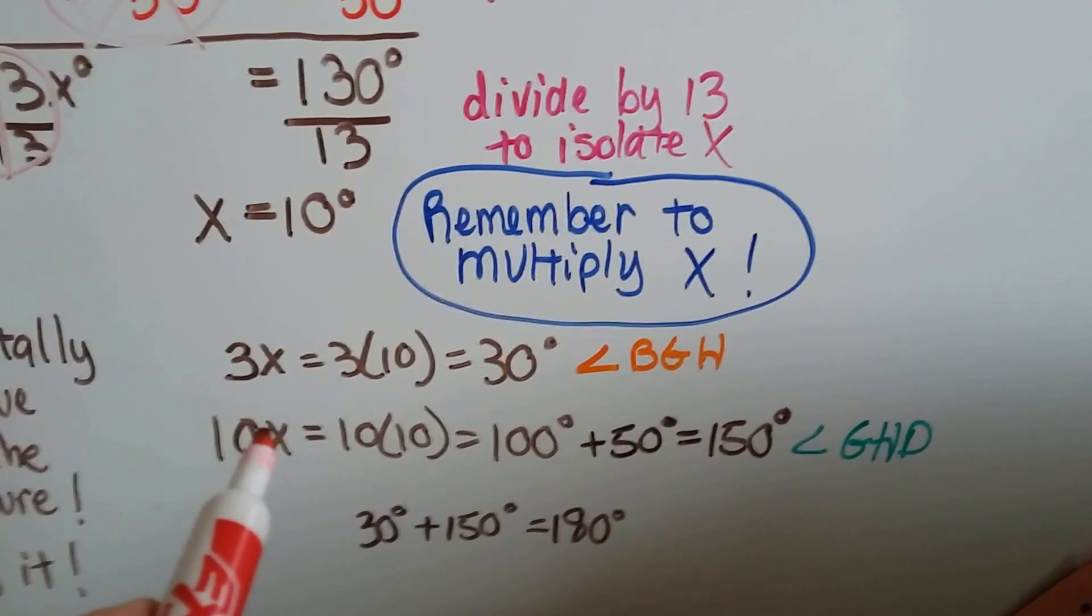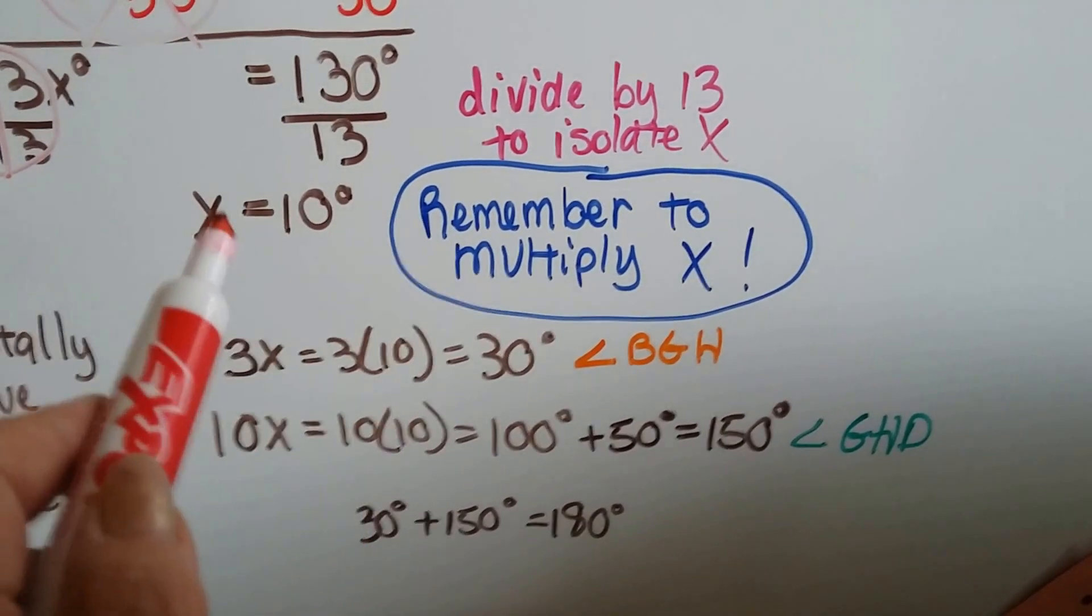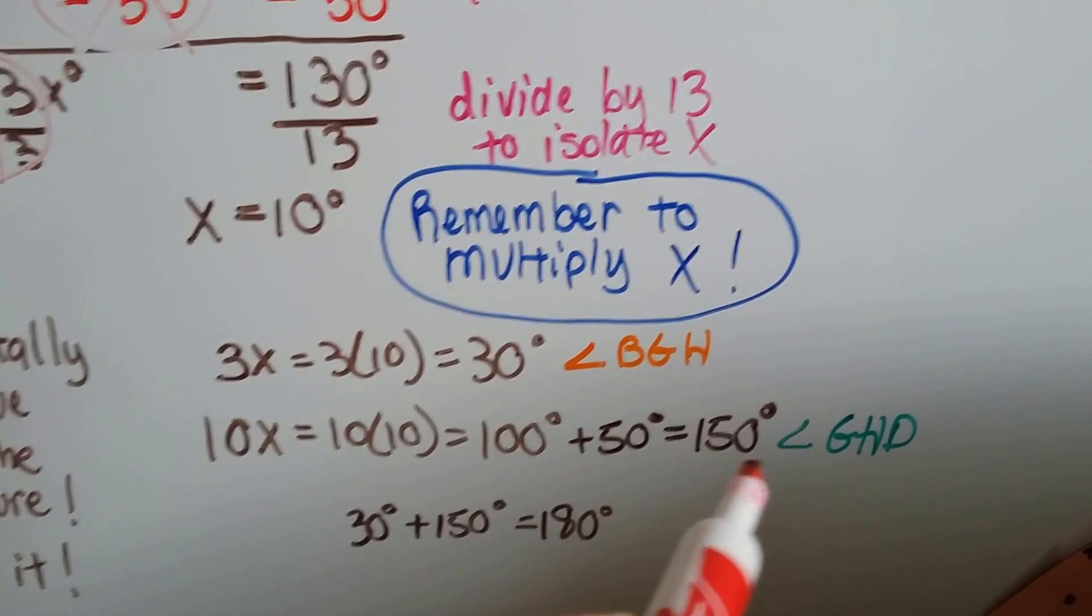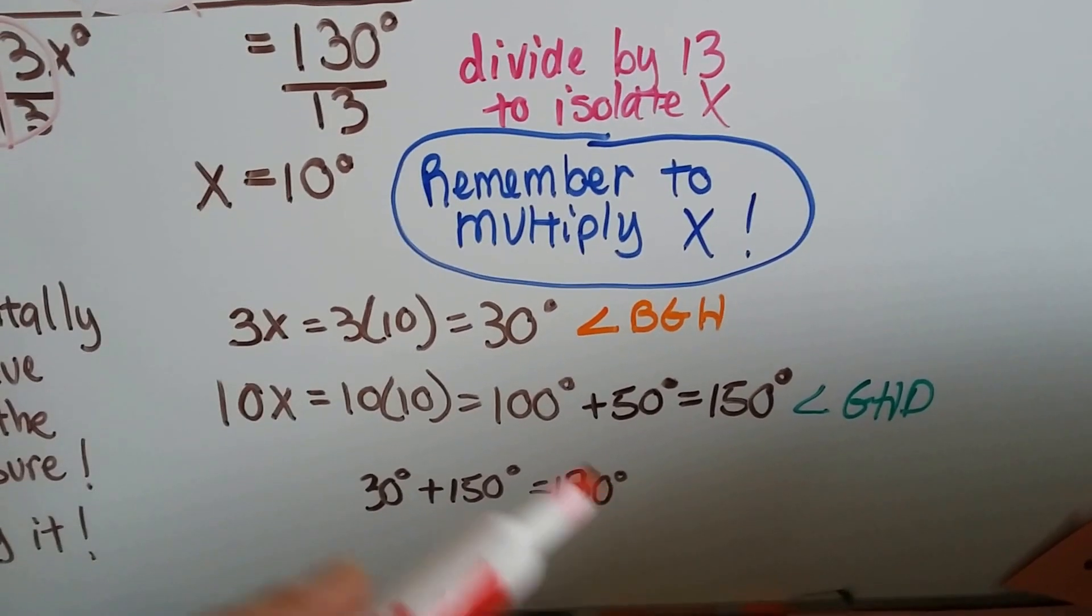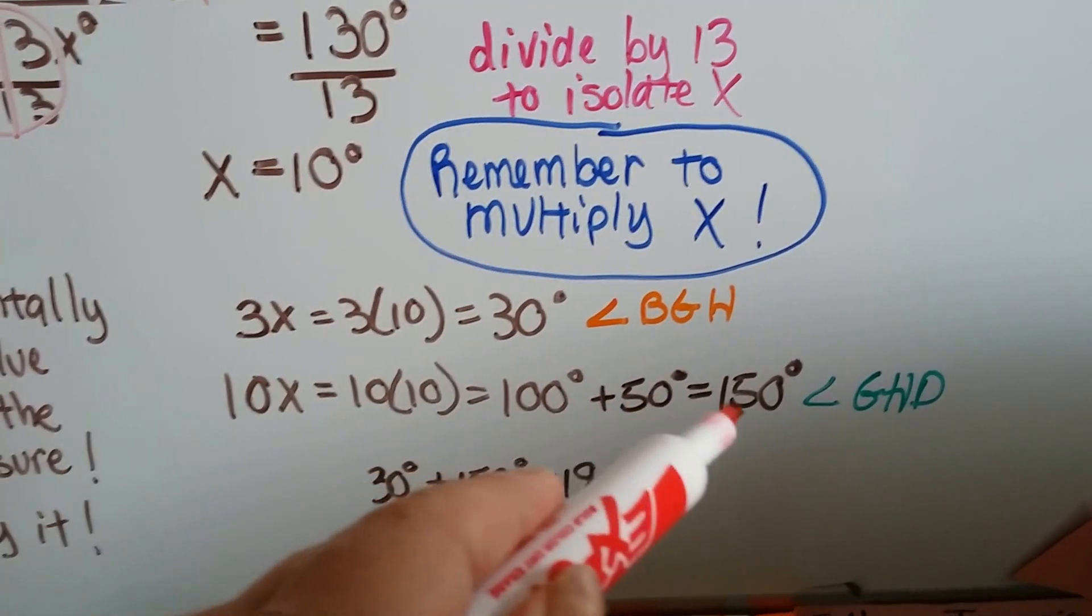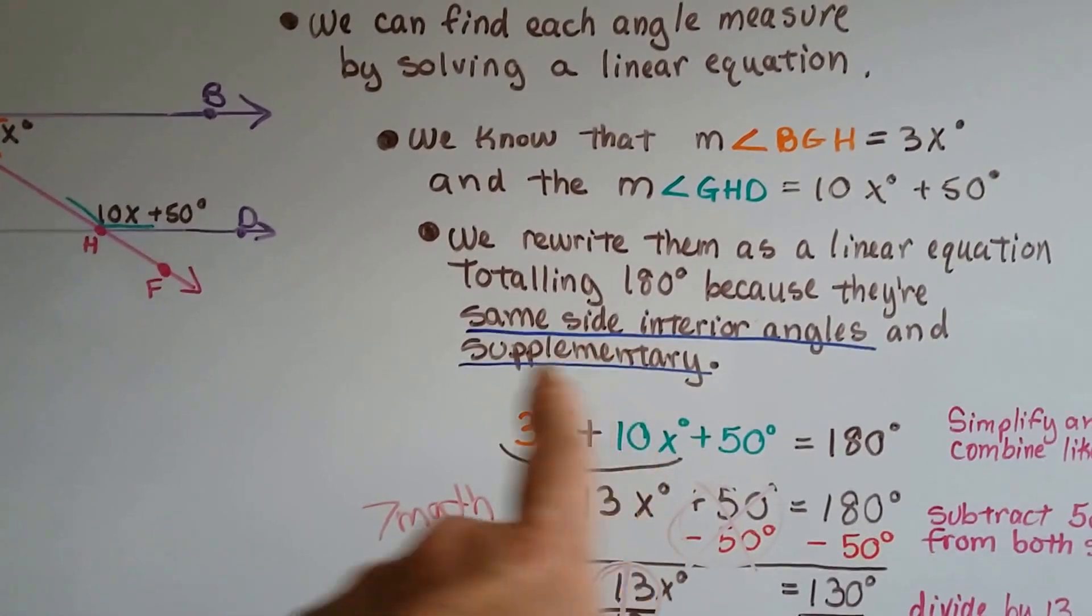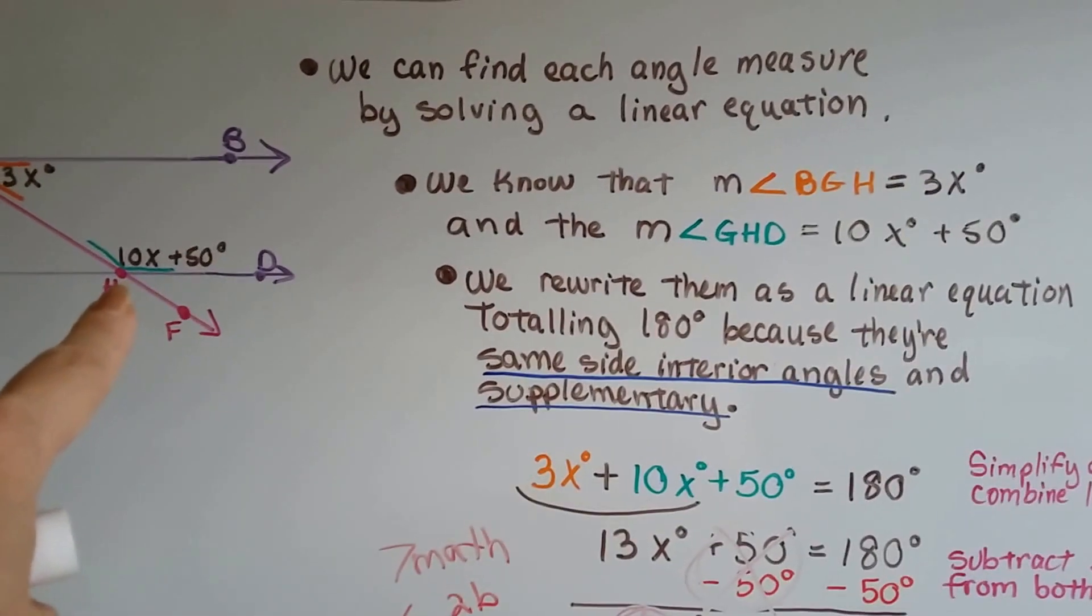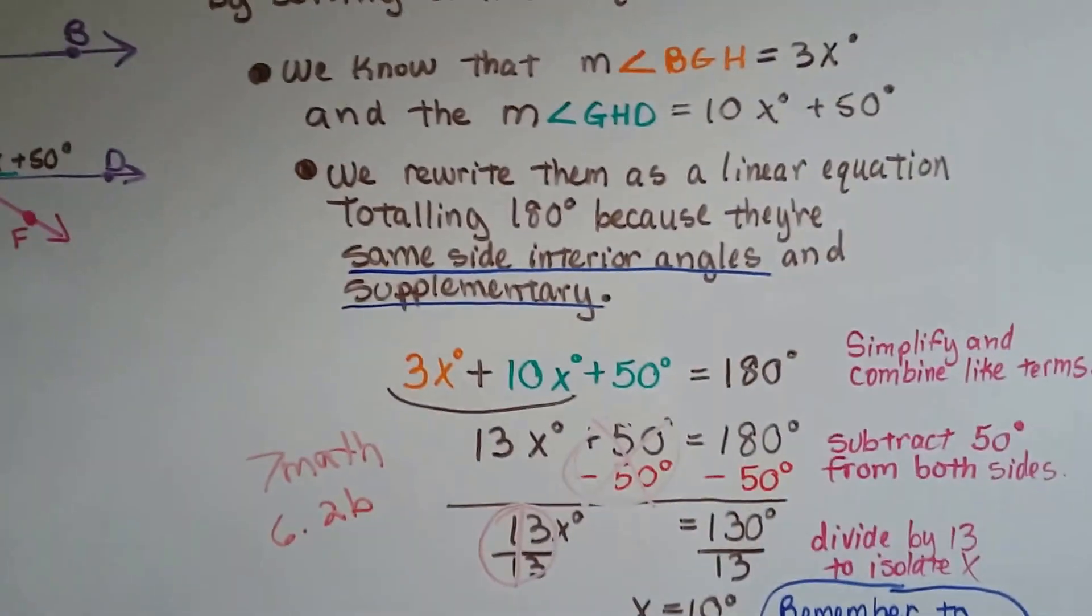The other one was 10x plus 50. So 10x is 10 times 10, because x is 10. That's 100, plus the 50 degrees is 150. So angle GHD is 150 degrees. When we add the 30 degrees to the 150, we get 180. Same side interior angles. They're supplementary. So we know this one's 30 degrees, and we know this one's 150 degrees.